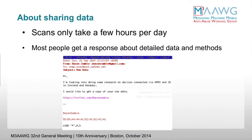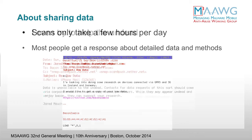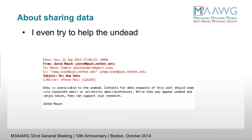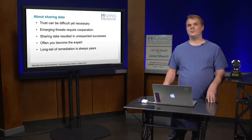Even though these scans only take a few hours every day, we get people who email us trying to get a response about the data we have and collaborate. Unfortunately, some of those people email from pseudonyms — like one from 'Bacon Zombie,' who even included old Commodore 64 information in his signature file. I really try to help people like this, including the undead, but sometimes you'll get a response from me that's not favorable, where I inform them that I really want to know who they are before sharing the information. Trust can be very difficult yet necessary when dealing with data sets like this.